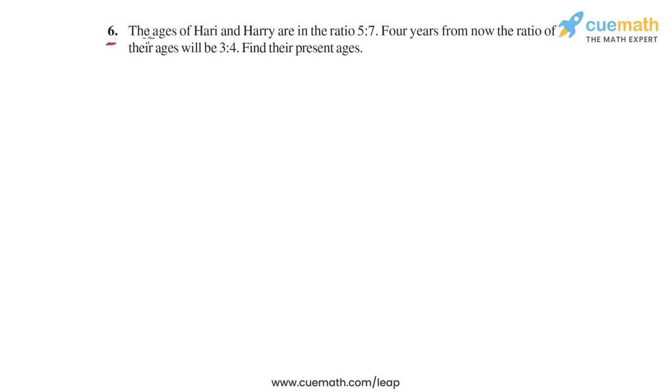In question 6, the problem statement says that the ages of Hari and Harry are in the ratio 5 is to 7. So their present ages are in the ratio 5 is to 7. Four years from now, the ratio of their ages will be 3 is to 4. Find their present ages.